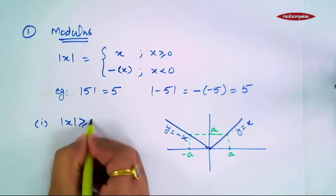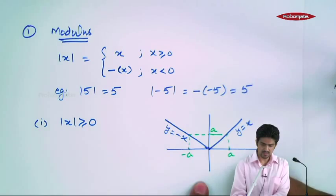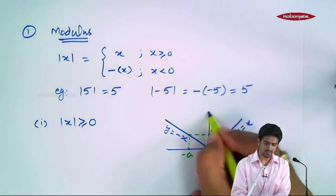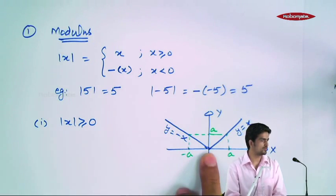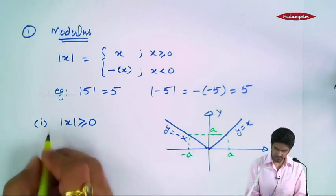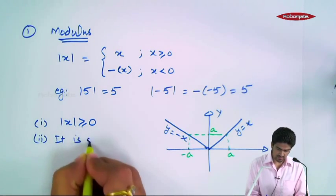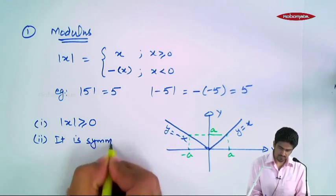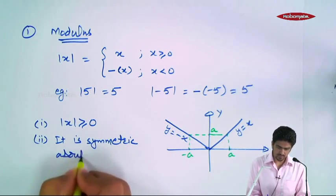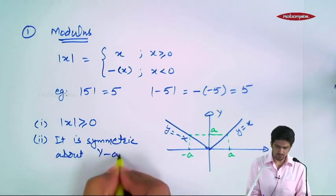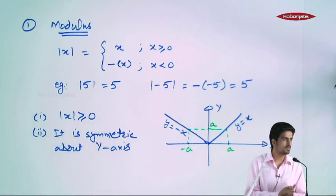Iske value hamesha greater than equal to zero. Niche values nahi aa rahi. Saari values x ke upar hain, y is positive, aur zero at x equal to zero. Second remark: it is symmetric about y-axis. Y-axis ke about symmetric hai — jaisa y-axis ke idhar hai, waisa y-axis ke udhar bhi hai.